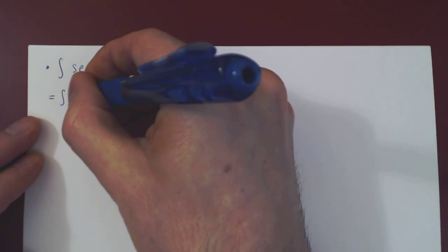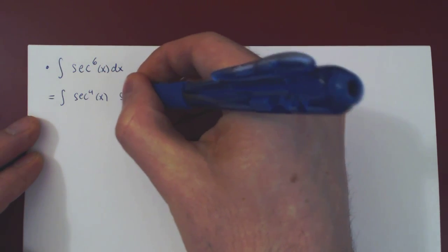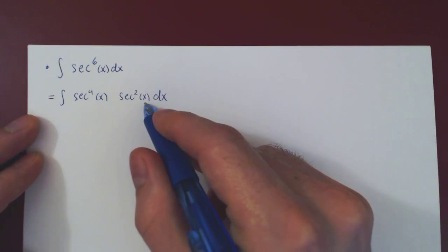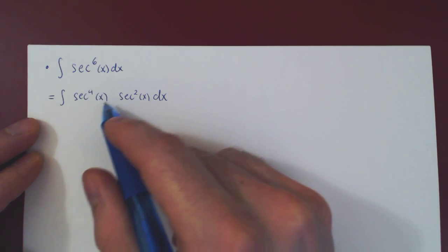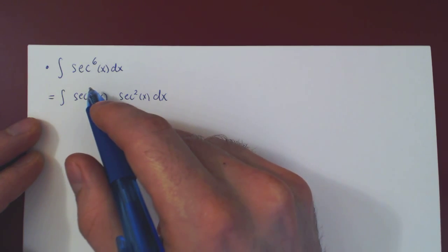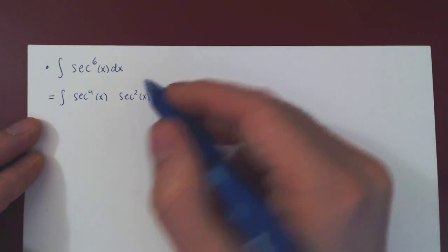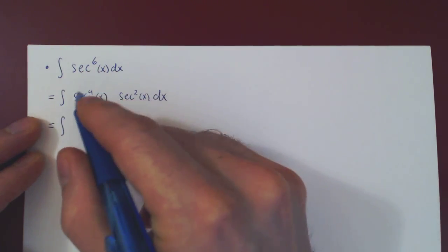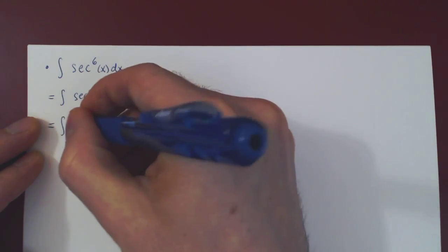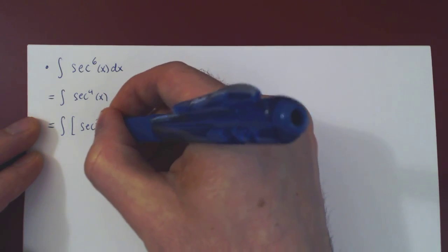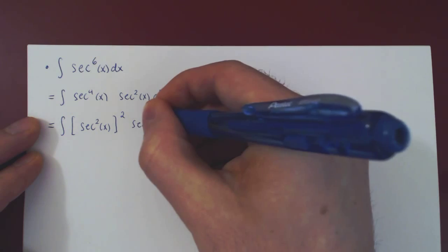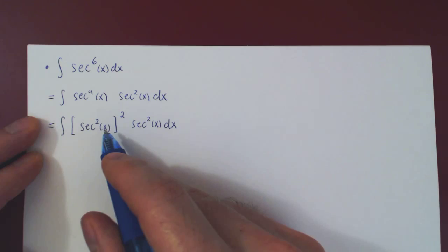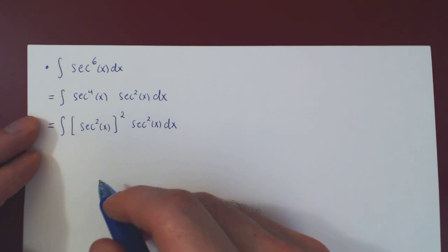We're left with secant to the sixth of x, which is secant squared of x times our secant squared of x dx. When we factor a secant squared, we have to replace everything else in terms of tangent. We have that secant squared is one plus tangent squared. So the idea is to rewrite the fourth power of secant as secant squared of x, all squared, times the leftover secant squared of x dx. Now we can replace secant squared of x by one plus tangent squared.